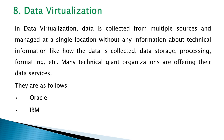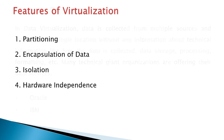The eighth type is data virtualization, where data is collected from multiple sources and managed at a single location without exposing technical details. Examples include Oracle and IBM. Features of virtualization include: first, partitioning — virtualization makes it possible to run multiple servers at the same time on a physical server.